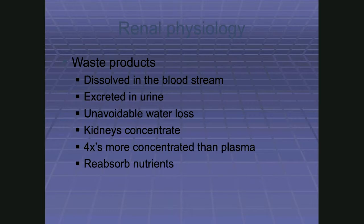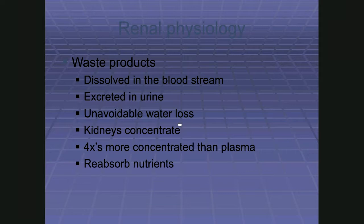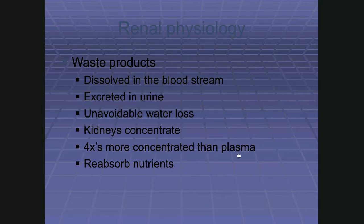There is an unavoidable water loss in urine production. One goal of the kidneys is to concentrate the urine as much as possible to limit water losses and prevent chronic dehydration. Urine is still 95% water, with only small amounts of actual waste — but we concentrate it much more than plasma. Starting with something like 50 gallons and ending with less than a gallon means we've concentrated it more than four times.